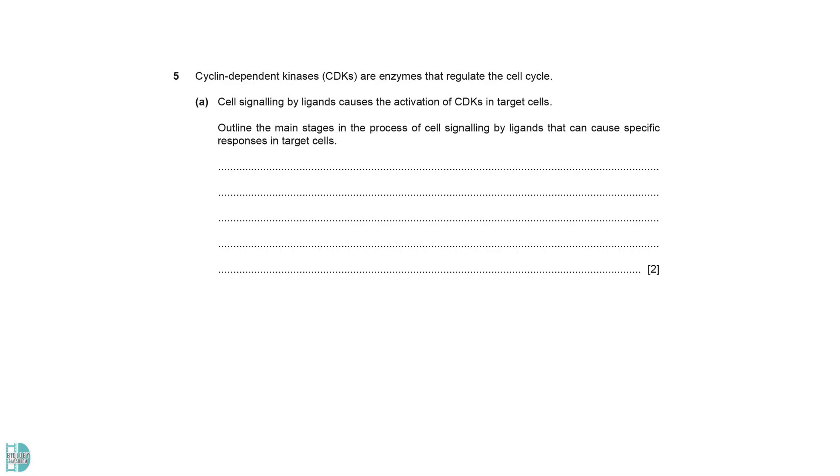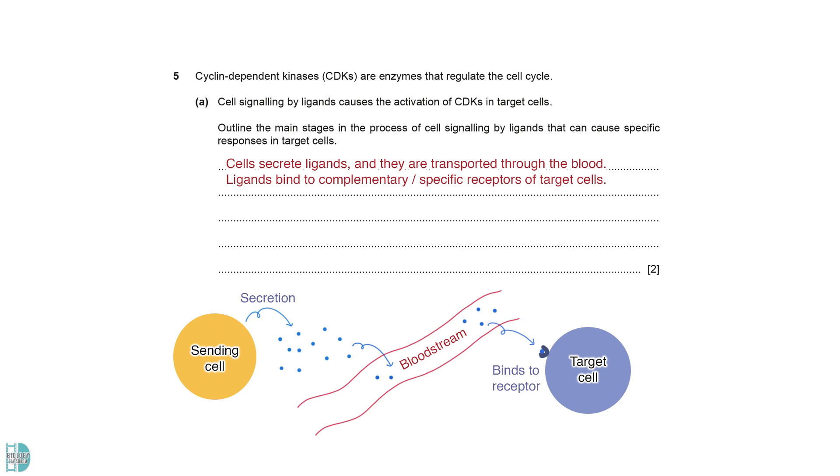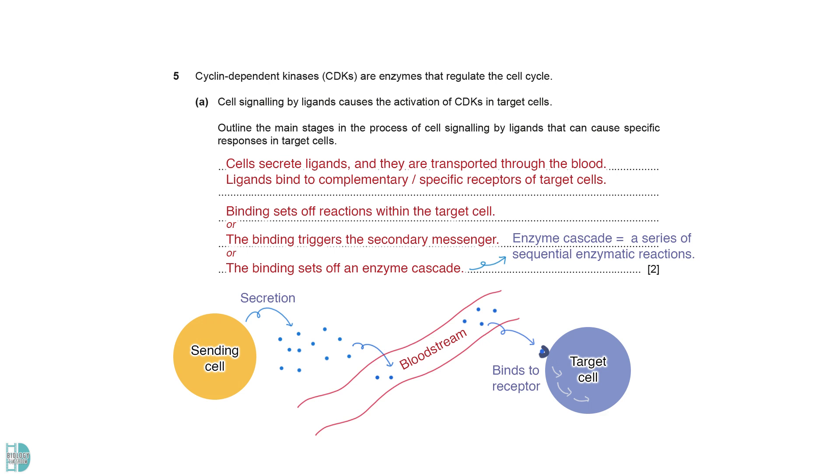5A wants you to outline the main stages in the process of cell signaling by ligands. After being secreted by the sending cells, ligands are transported through the blood. It will bind to the specific receptors of the target cells. They have complementary shapes. The binding sets off reactions within the target cell. For example, some ligands trigger the secondary messenger pathway, causing an enzyme cascade within the cell. The target cell will then have some changes and this is the response.